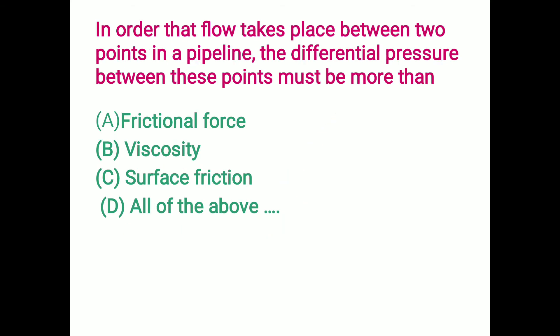In order that flow takes place between two points in a pipeline, the differential pressure between those two points must be more than the frictional force, viscosity, and surface friction — all of the above. Option D is the correct answer.